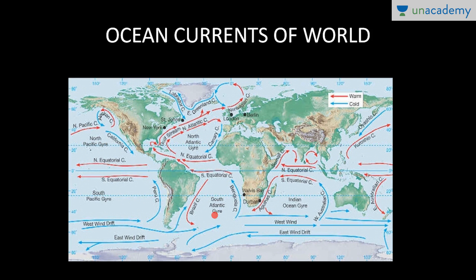Similarly, in the South Atlantic Ocean we have the Brazil Current, which is again a warm current. Then there is the Falkland Current, the cold one, and the Benguela Current. These are the currents of the South Atlantic Ocean. In the South Pacific Ocean, we have the cold current West Wind Drift, and then there is the Peru Current.